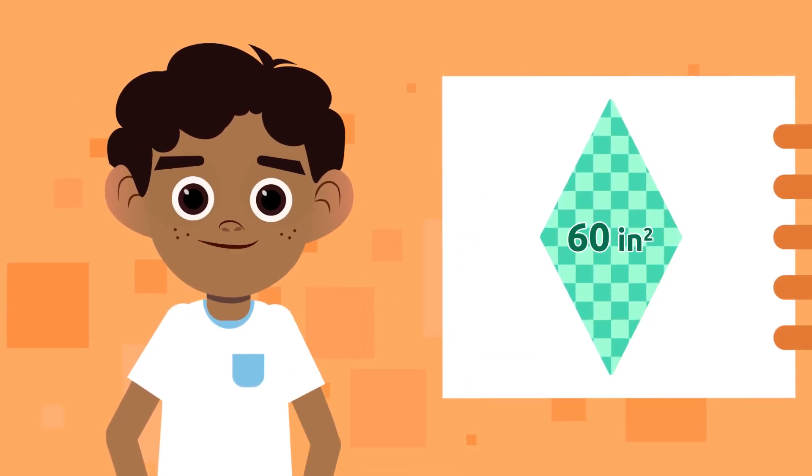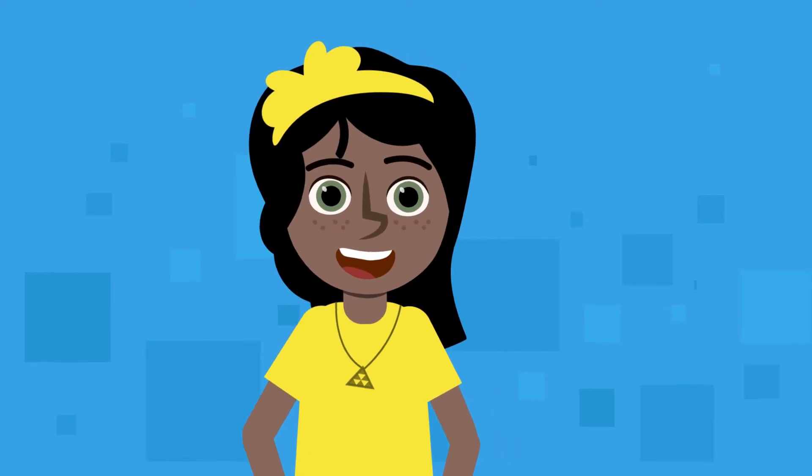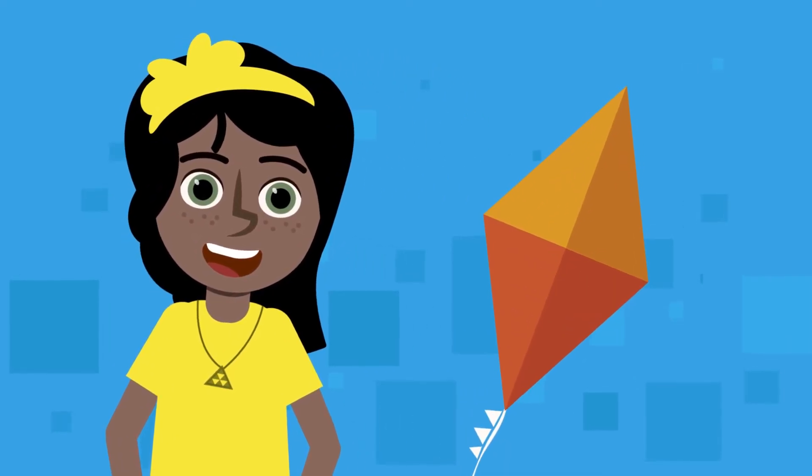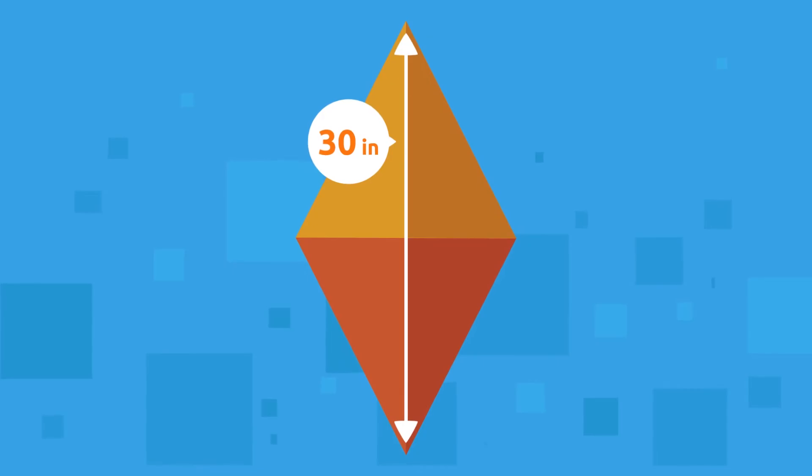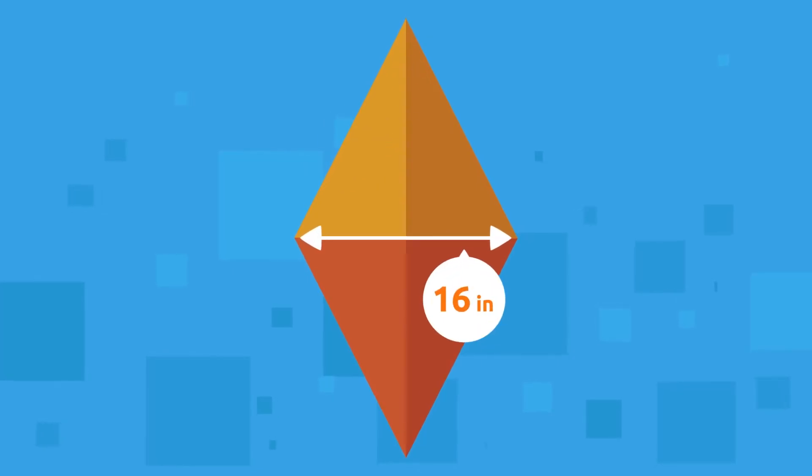Let's look at another example. Anna has a rhombus-shaped kite. If the longest diagonal measures 30 inches and its shortest diagonal measures 16 inches, what is its total area or surface?